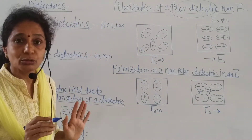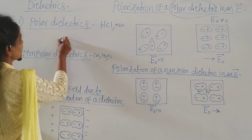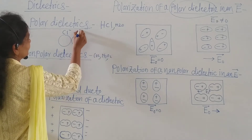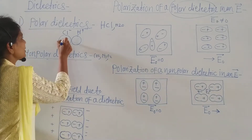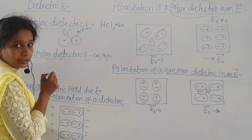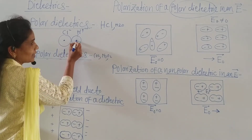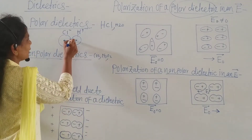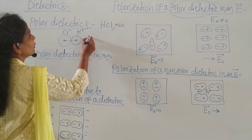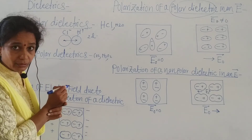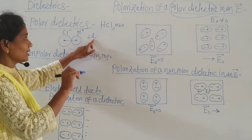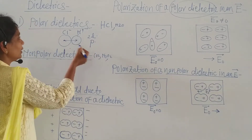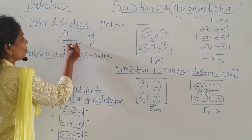Let us see the example. Consider HCl — this is the Cl and this is the H⁺. The center of Cl and the center of H are well separated; they do not coincide. Therefore, there is a separation of charges, giving a dipole length of 2L. There is an electric dipole moment P, and the direction of the electric dipole moment is from minus to plus.